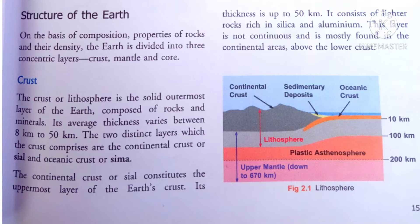Earth's structure covers the composition, properties of rocks, and density of our planet. The crust is the solid outermost layer of the Earth, composed of rocks and minerals. Its average thickness varies between 5 km to 50 km. The two distinct layers which comprise the crust are the continental crust, or SIAL, and the oceanic crust, or SIMA.